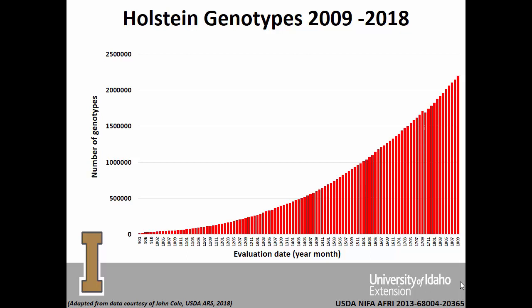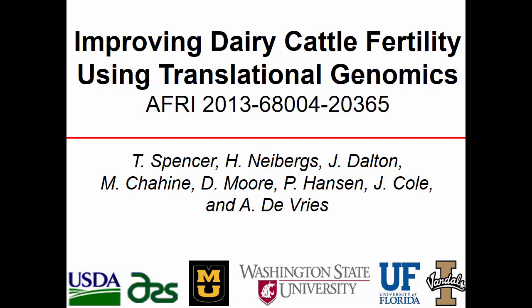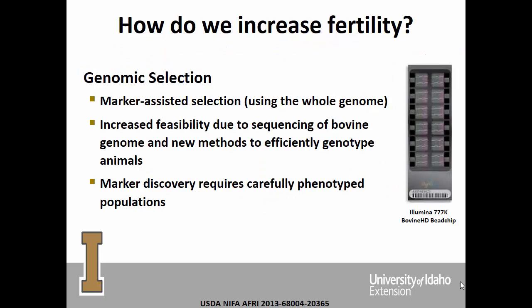Genomic testing has really only been available since about 2009, and this data runs through September 2018. Now we're going to discuss the grant — a multi-institutional project between USDA, Missouri, Washington State, University of Florida, and University of Idaho. The idea is to identify novel markers and then have producers be able to use those markers for selection. Genomics allows marker-assisted selection using as much of the genome as possible, with increased feasibility due to sequencing of the bovine genome and new methods to efficiently genotype animals.